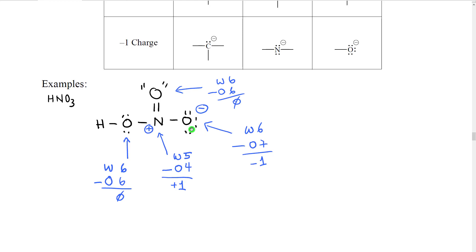This third oxygen, however, is different. It wants six. It owns two for each lone pair — so two, four, six — plus one additional electron for that bond, meaning it owns a total of seven electrons. Six minus seven is negative one, so that oxygen has a negative one formal charge, which we put in a circle next to the atom. Finally, this nitrogen wants five. It owns one, two, three, four. Five minus four gives us a positive one charge — this nitrogen has a positive formal charge.